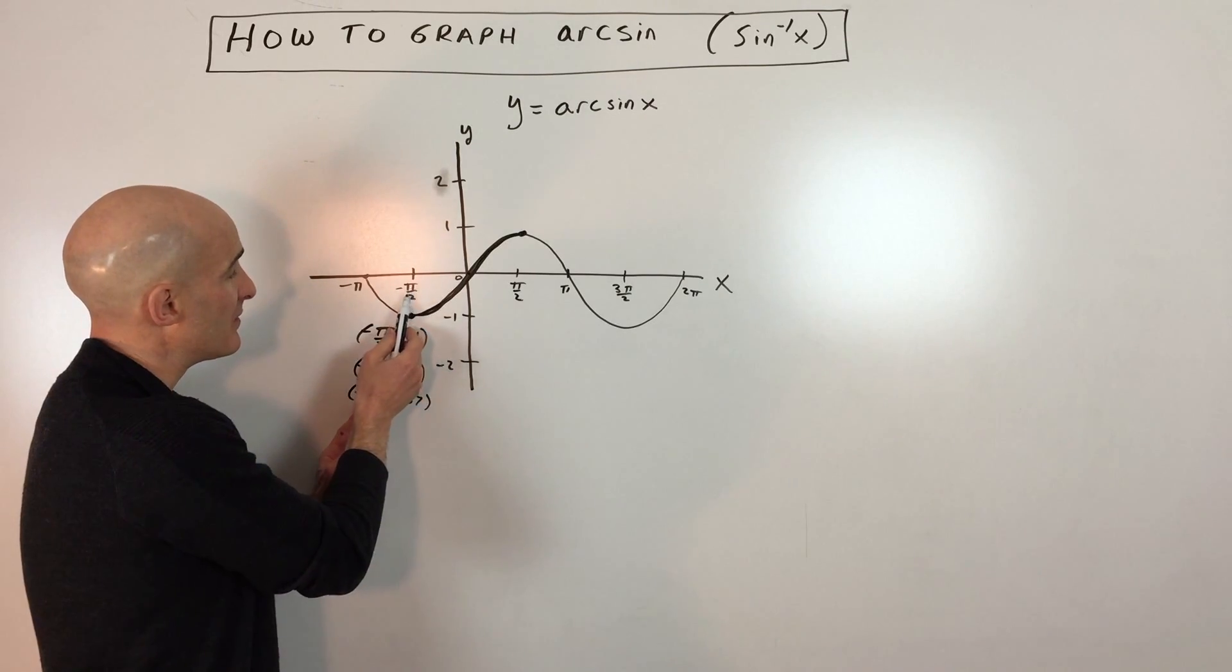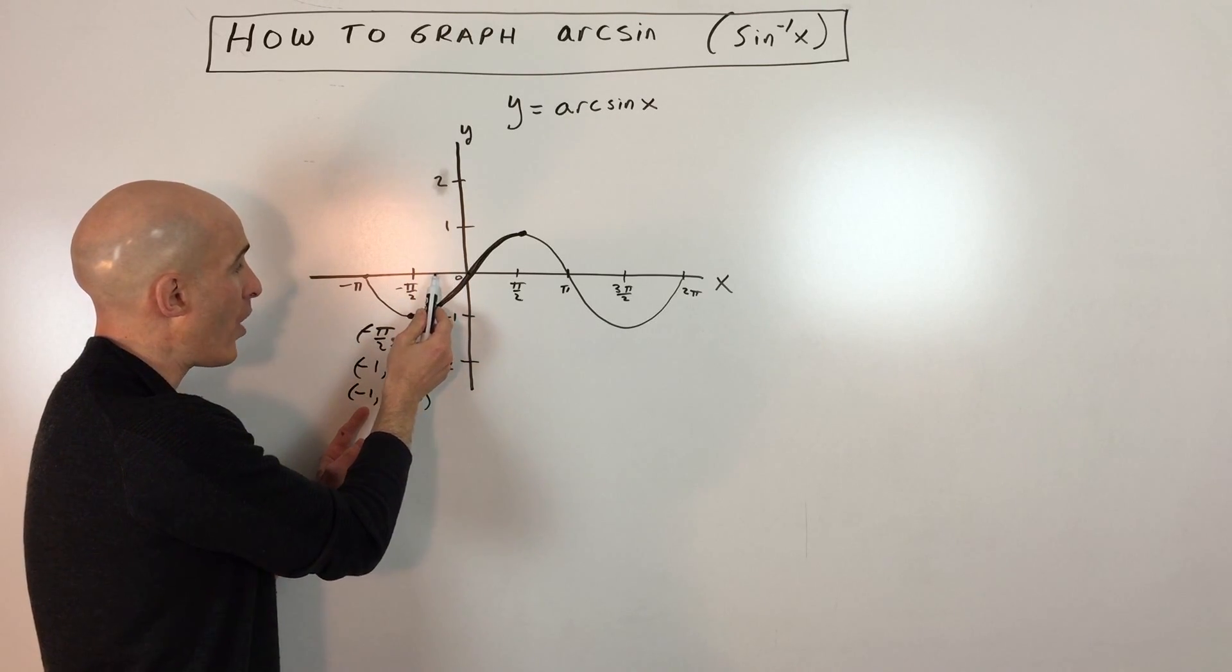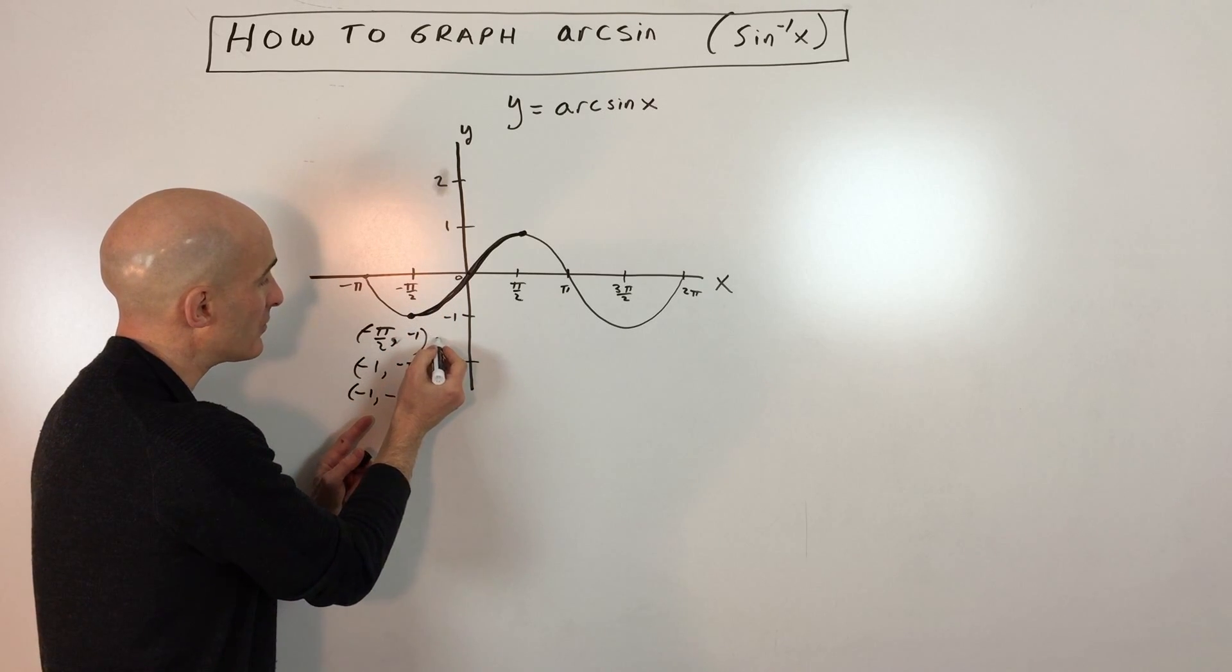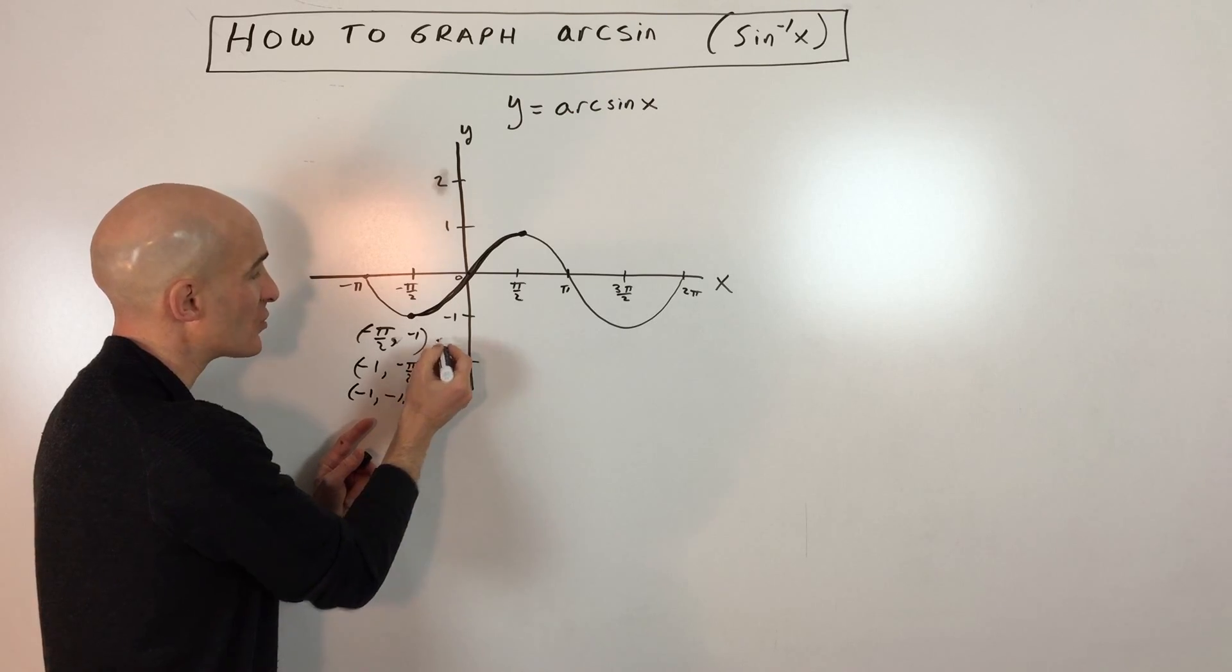So if we graph this, negative π over 2 is like negative 1.57. We're at negative 1, which is going to be right about there, about two-thirds of the way, and then we're going to go down negative 1.57, which is going to be right about there. You're with me so far?